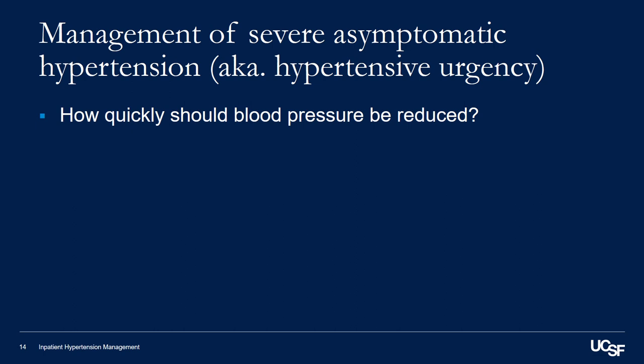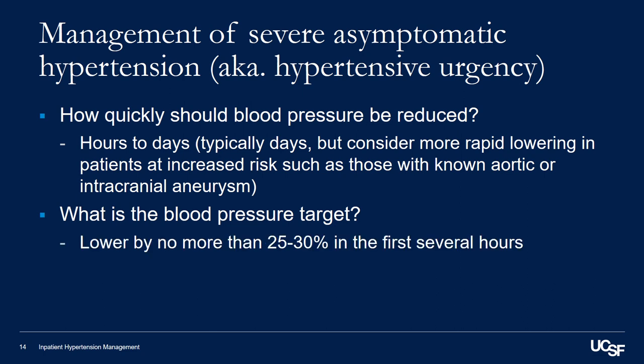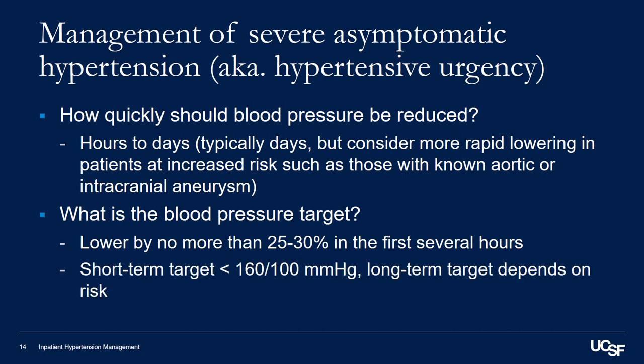In terms of timing, the blood pressure should be reduced over the period of hours to days, and typically this should be on the order of days. You can consider more rapid lowering in a patient who's at increased risk, such as one with a known aortic or intracranial aneurysm. The blood pressure should be lowered by no more than 25 to 30 percent in the first several hours, and a reasonable short-term target is less than 160 over 100 millimeters of mercury, though the long-term target depends on the patient's individual risk.